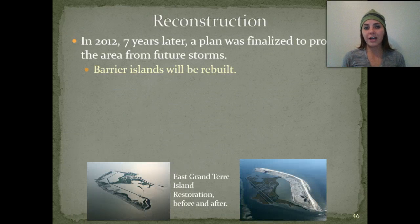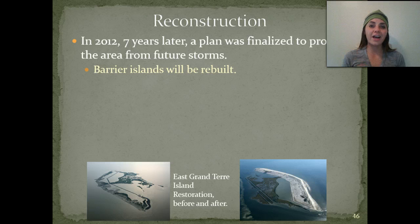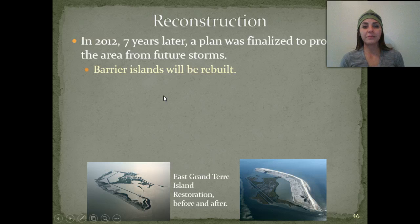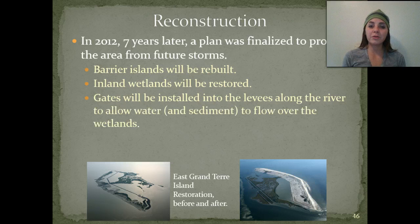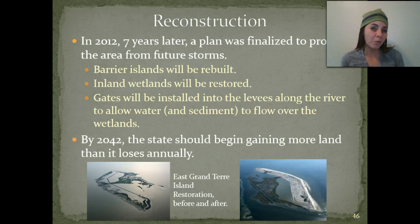Reconstruction has taken place, and a lot of different plans have been put in place so this doesn't happen again. In 2012, seven years after the storm, a plan was finalized to protect the area from future storms. Barrier islands were rebuilt and inland wetlands will be restored. Gates will be installed into levees along the river to allow water and sediment to flow over the wetlands so the sediment helps to build them up. By the year 2042, the state should actually begin gaining more land than it loses.